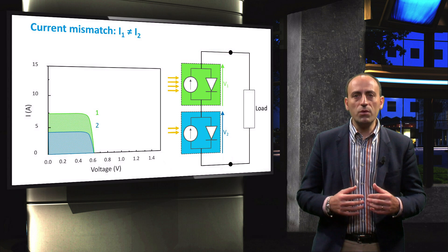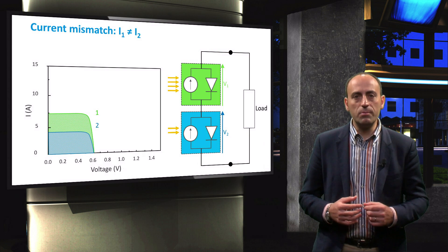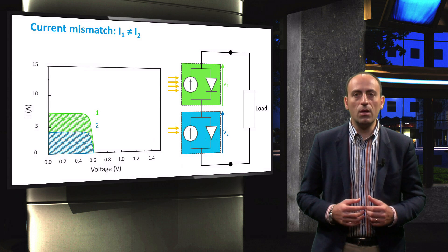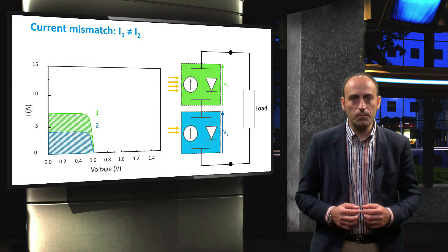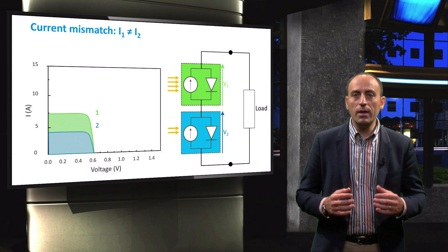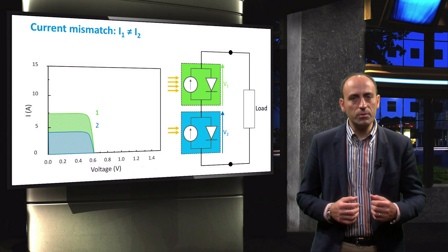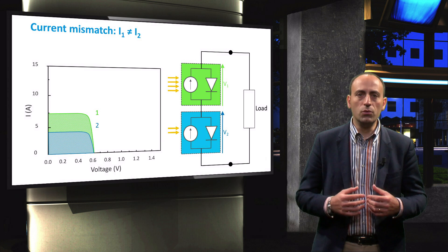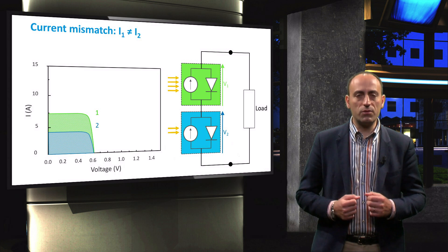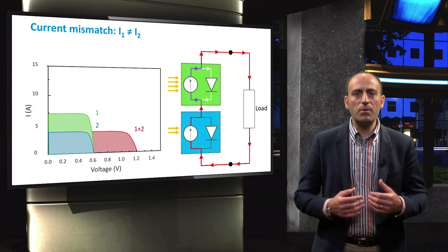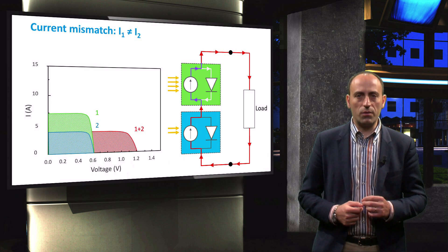The effects are more severe when considering a mismatch in the short circuit current of the series connected solar cells. This can occur, for example, in case of partial shading of cell 2. In this circumstance, the cell 2 current is lowered with respect to that of cell 1. This represents the bottleneck of the series connection.